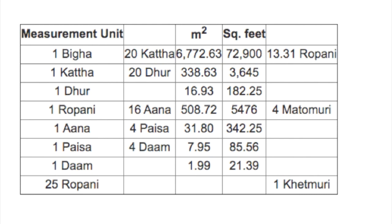To summarize: one Bigha equals 20 Katha, which is equivalent to 13.1 Ropani, and one Ropani equals 16 Ana. These are the measurement systems used in Nepal.